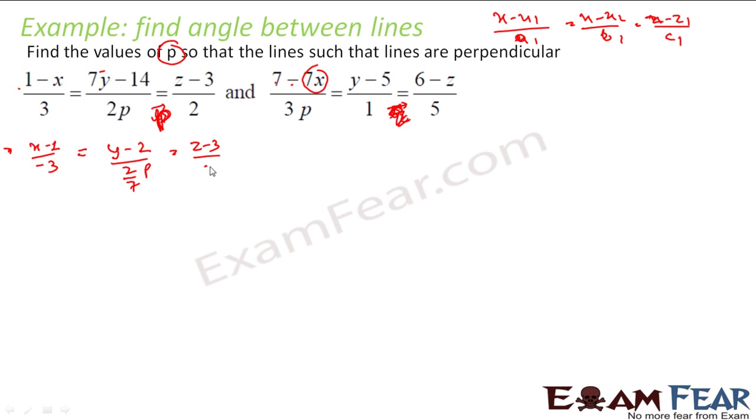And this one is correct. This equation becomes x minus 1 by minus 3 by 7p. I divide this by minus 1 by 7. This becomes y minus 5 by 9. This becomes z minus 6 by minus 5. So thus these equations now follow this pattern.